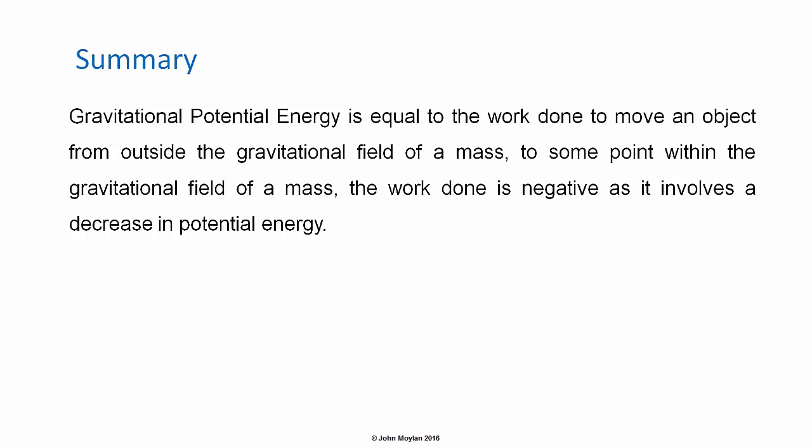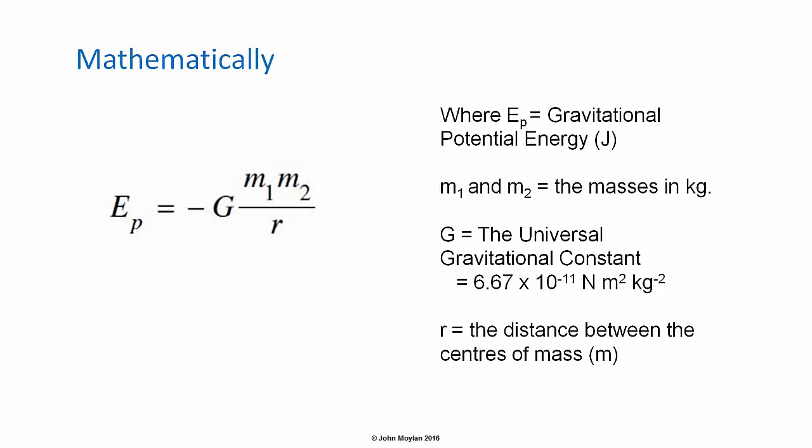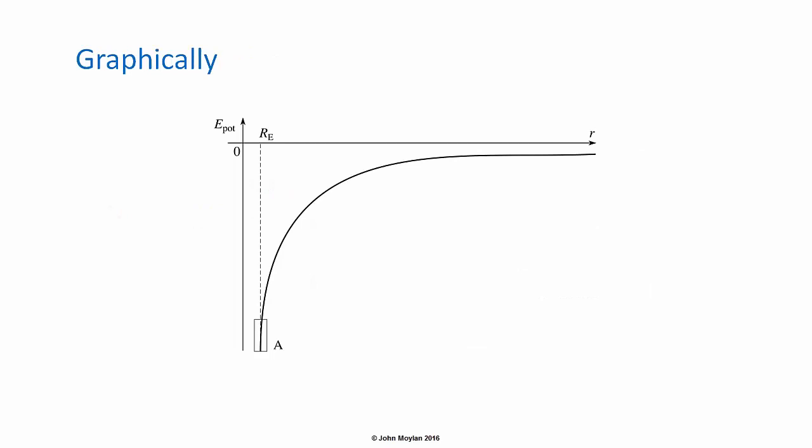Summary. Gravitational potential energy is equal to the work done to move an object from outside the gravitational field of a mass to some point within the gravitational field of a mass. The work done is negative, as it involves a decrease in potential energy. Mathematically, E subscript p equals minus G times m1 times m2 over r, where m1 and m2 are the masses of the two objects in kilograms, G is the universal gravitational constant, and r is the distance between the centers of mass in meters. Graphically, gravitational potential energy plots as an inverse square graph, as a result of the force due to gravity decreasing with the inverse square of the distance from the center of mass.